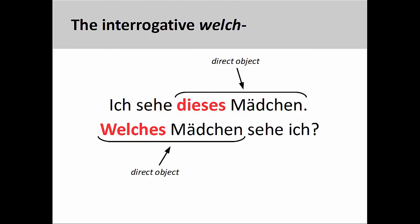Although we can use der-words almost anywhere in a sentence, since welch is an interrogative, it must always come in the first position. For a speaker of English, this may sound a bit unusual. In the first sentence, the typical order between subject, verb, and direct object is maintained. In the second sentence, however, the direct object comes in the first position on account of using welch. You may want to review the presentations on German syntax and interrogatives to refresh this concept.